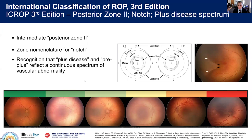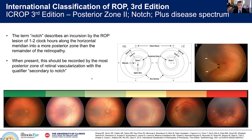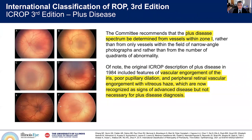Also presented is the discussion around documenting posterior zone 2. A new diagram is now being published describing what posterior zone 2 is and describing the notch. If you have zone 1 secondary to a notch, you should document that. The notch describes an incursion by the ROP lesion of 1 to 2 clock hours along the horizontal meridian into a more posterior zone than the remainder of the retinopathy. If that's the case, you would document this as secondary to notch.